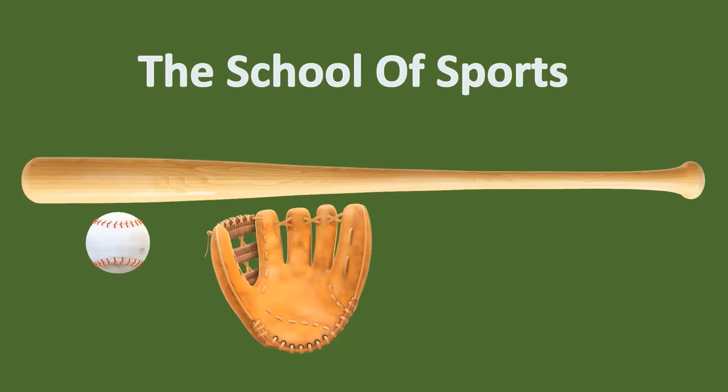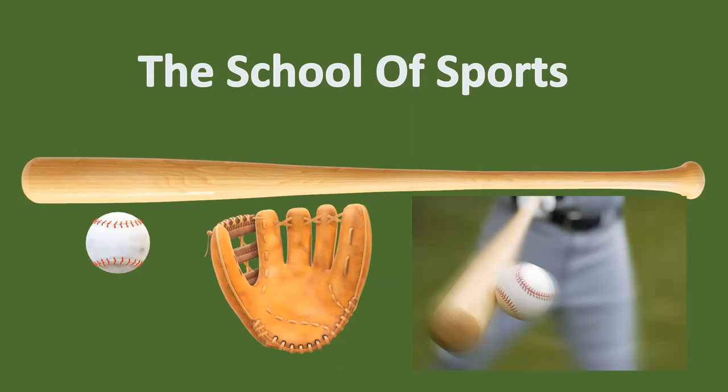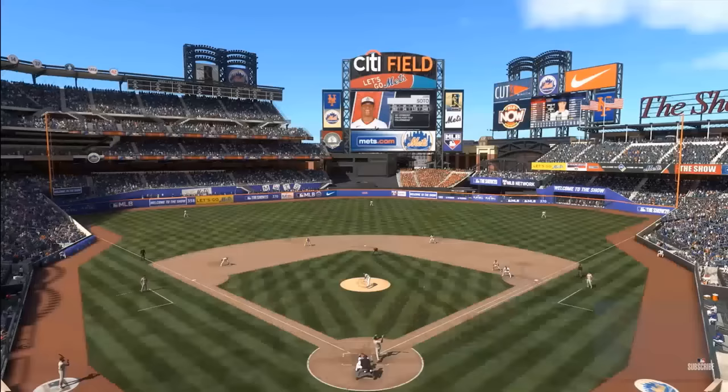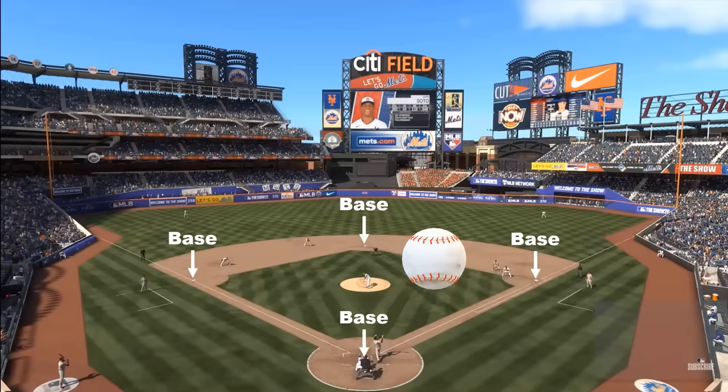Baseball is played with a bat, ball and a glove. The bat is circular in shape so it's hard to hit the ball where you really want to hit it. Baseball is played in massive stadiums and you would see four blocks on the baseball field. They are called bases, and because it's played with a ball, the game is called baseball.